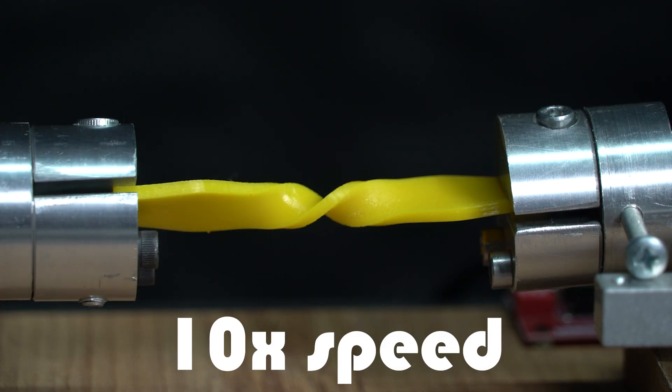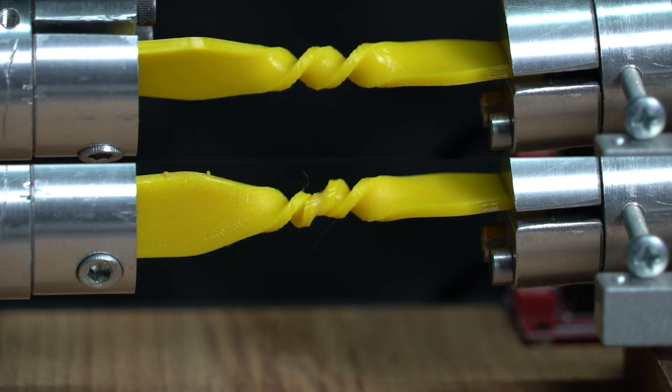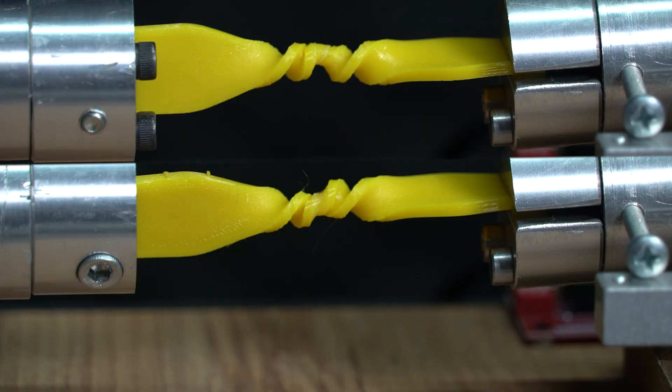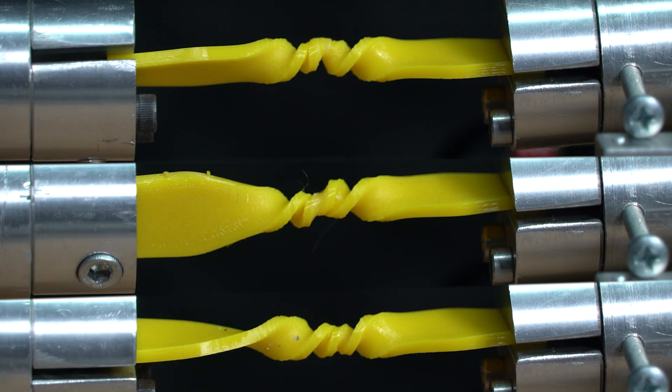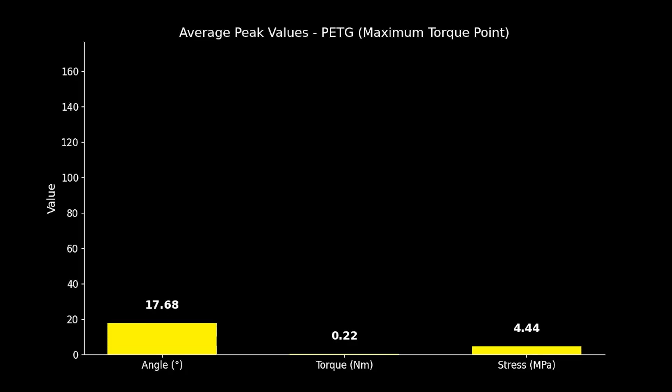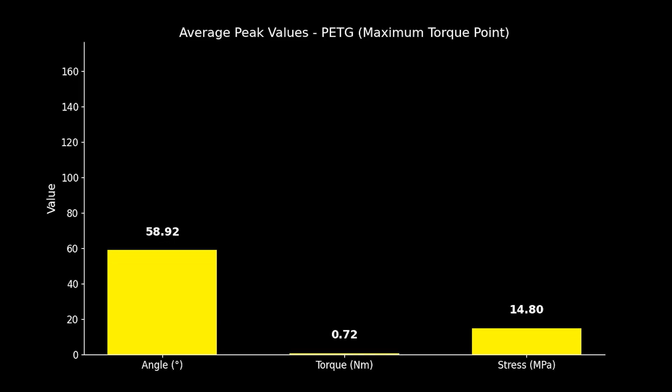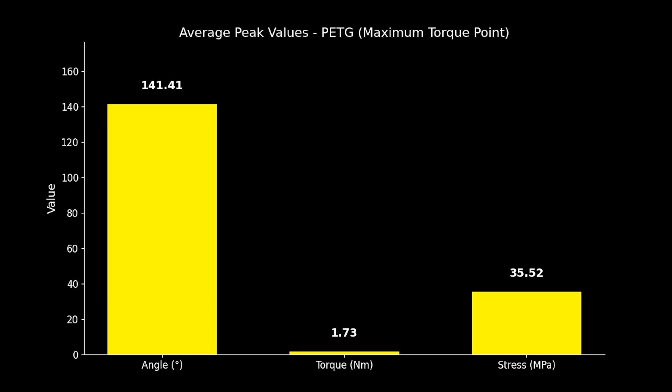Next up, PETG. The flexible fighter takes the stage. The results, PETG. Average angle, 147.3 degrees. Max stress, 37 megapascals. Max torque, 1.8 newton meters.